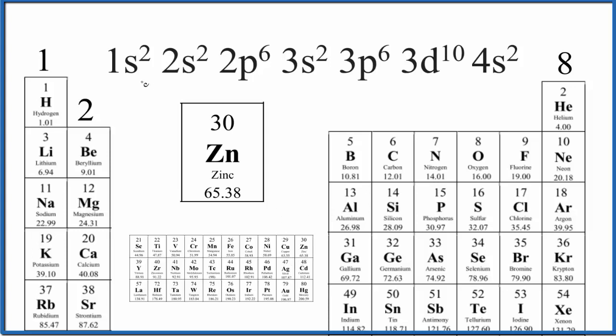We can use that if we write the electron configuration. All these numbers here, they add up to 30. So this is our electron configuration for zinc. And we can use this to figure out the number of valence electrons. It's easier if we write this in condensed notation.